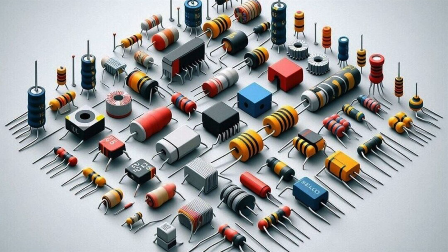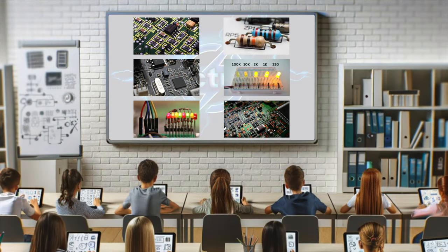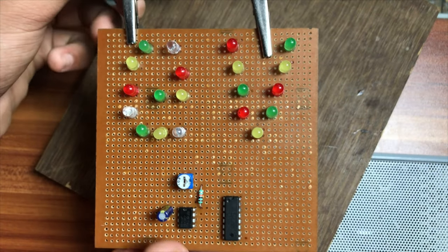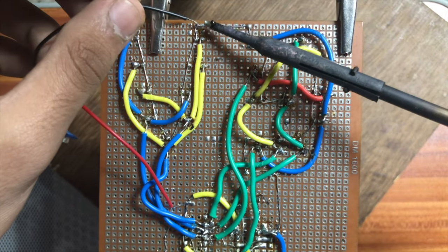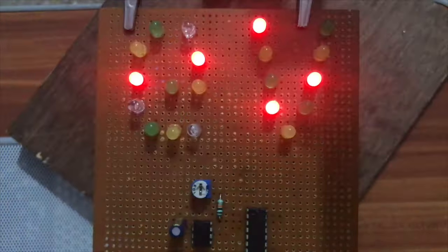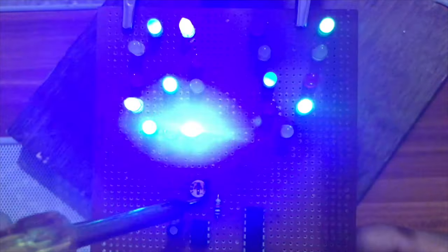We hope this video has given you a better understanding of resistors and their significance in electronic circuits. By now, you should have a solid grasp of how to identify different types of resistors, read their color codes, calculate their values, and incorporate them into various applications. As you embark on your journey in electronics or continue expanding your knowledge, keep experimenting and exploring new ways to utilize resistors in your projects.